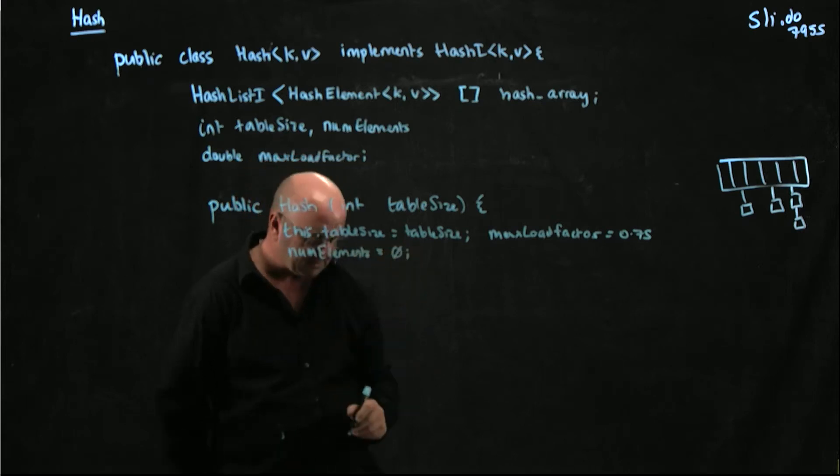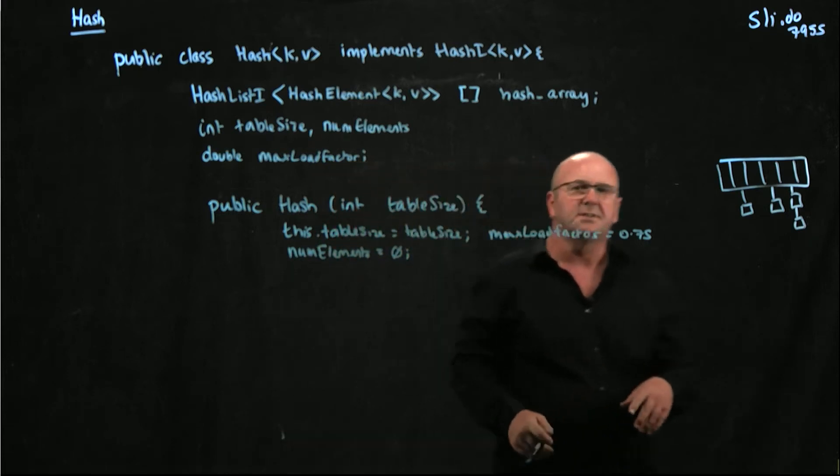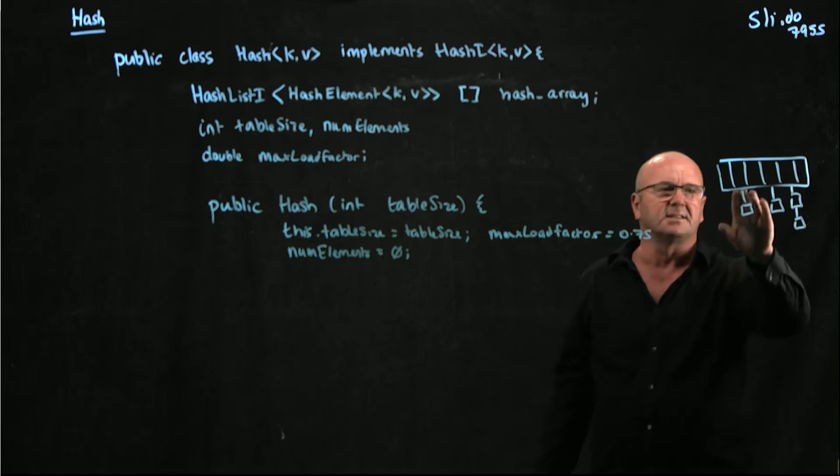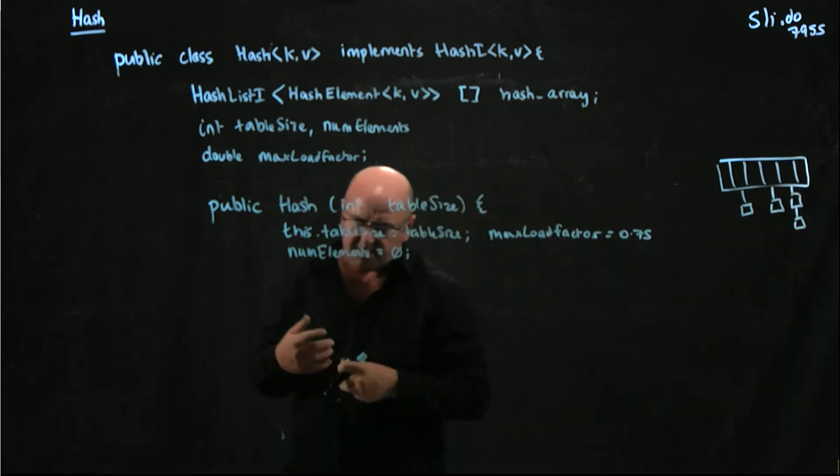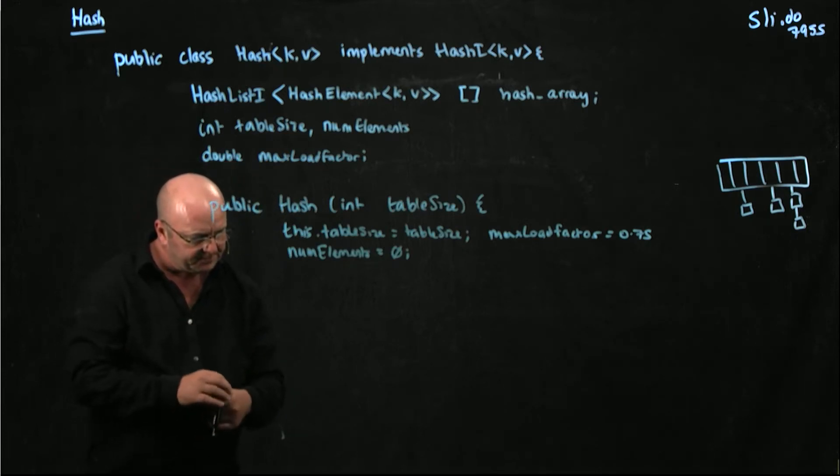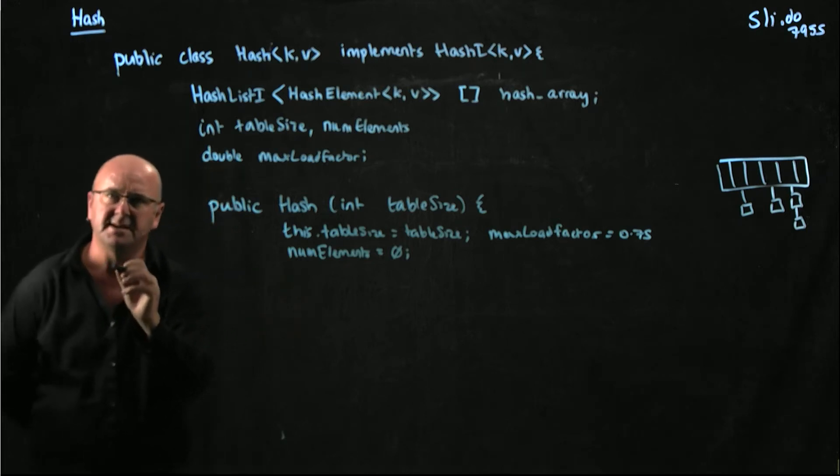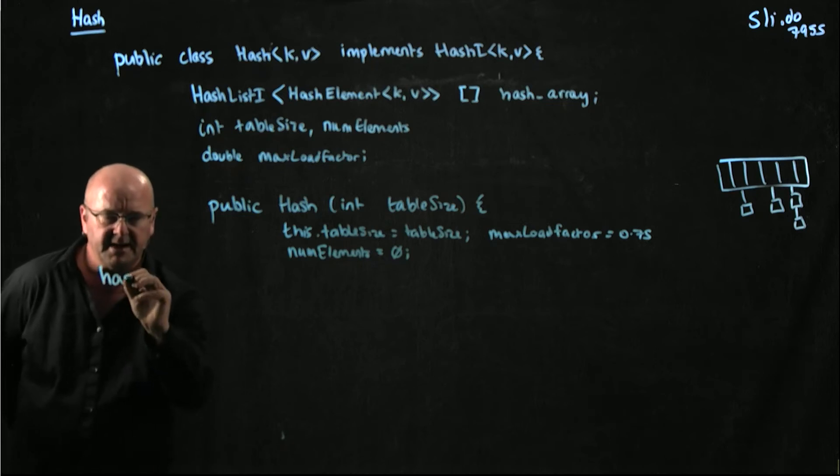OK, we're all set. We've taken care of the simple variables. Now what we need to do is we need to define our array of linked lists. And this is just something where the Java code is just a little bit gnarly because we're working with generics in Java. And so the way that we do that, and I'm going to just start over here so I've got lots of real estate to write with.